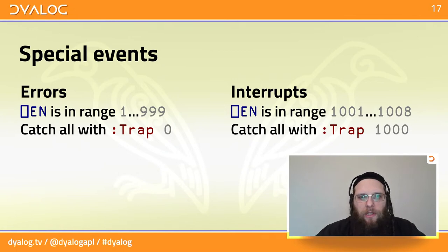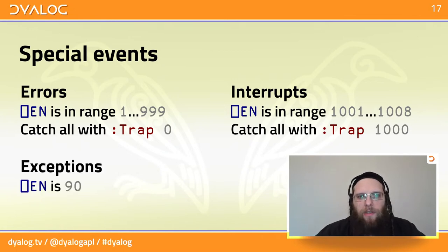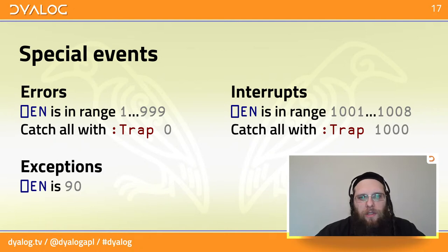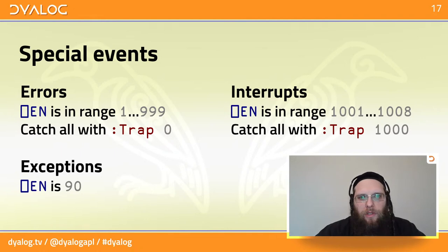Finally, there is a special case — error number 90 — which has separate behavior from all other errors and is called an exception. We'll deal with that at the end.